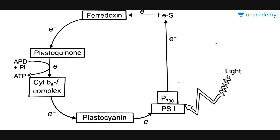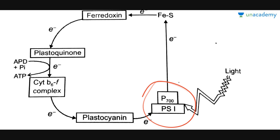What happens in cyclic photophosphorylation? There is involvement of only one photosystem, which is Photosystem 1, which has a reaction center P700. If you remember from my previous videos, I have already talked about the structure of the pigment molecules or chlorophyll molecules. The pigment molecules or chlorophyll molecules consist of very small photosynthetic units.